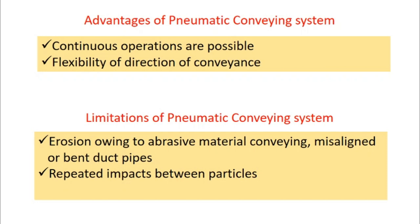The major advantages of pneumatic conveying systems include the ability to run continuous operations and the flexibility of conveyance direction. Unlike belt conveyors, screw conveyors, or bucket elevators which have directional limitations, pneumatic conveying allows multiple turns of the conveyor duct and discharge to any point in any direction.